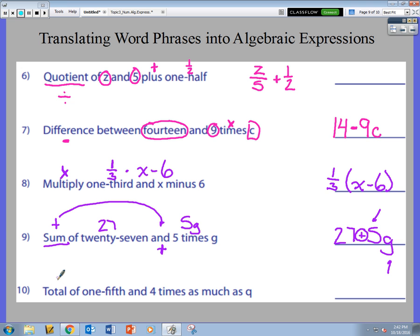And finally, last but not least, total. Total. I have four dollars, I have ten dollars, I have a total of whatever that is. So total means to add. Total of one-fifth and, add, one-fifth and four times as much as q.